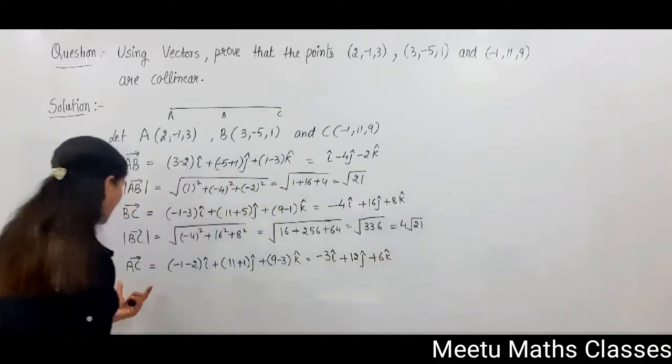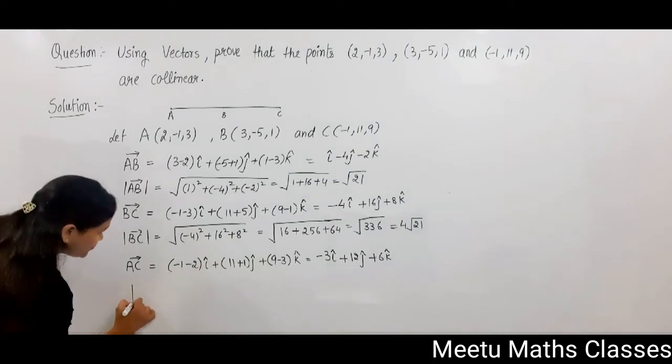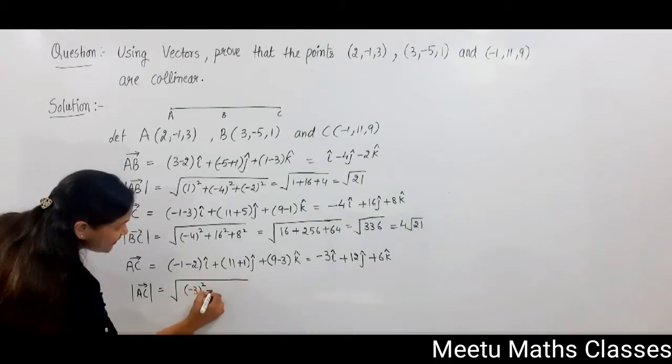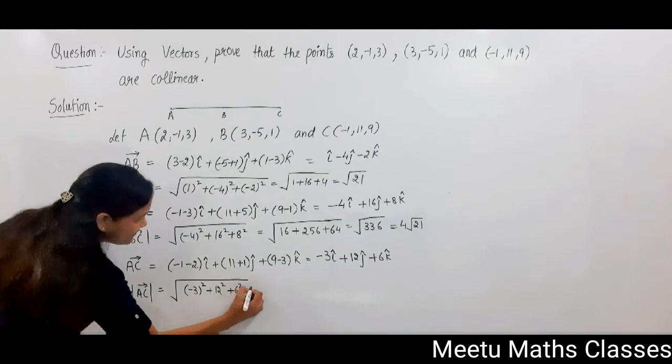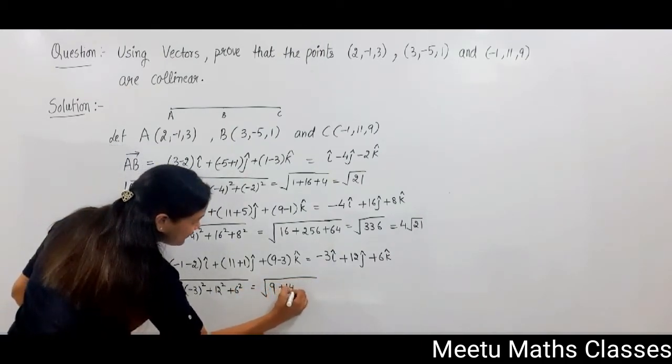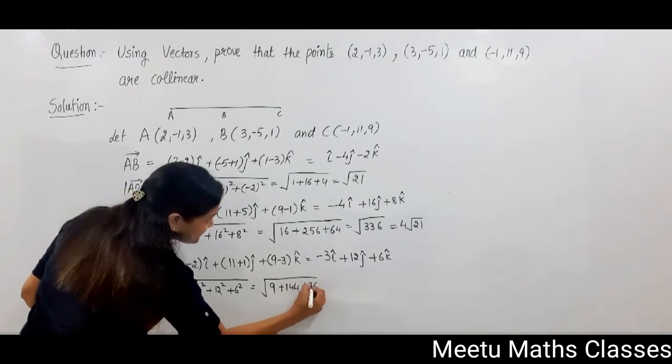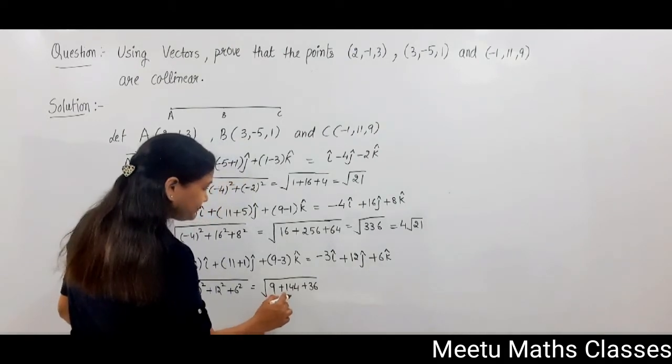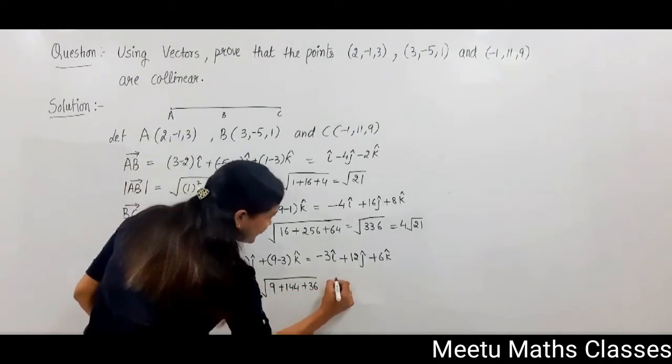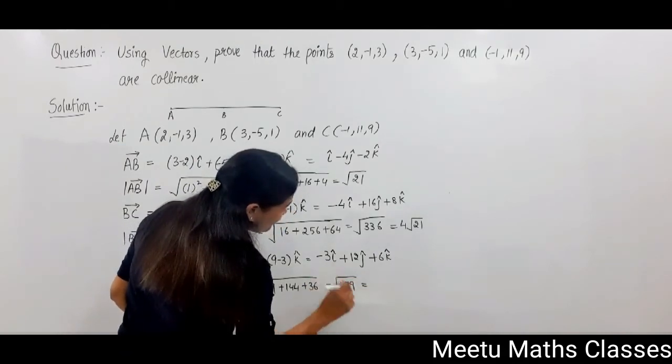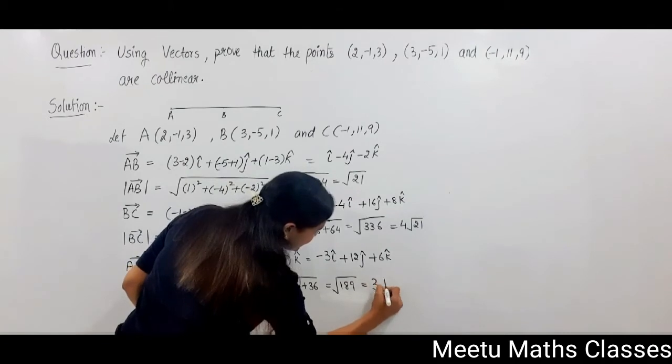Now from this vector AC we can find the magnitude of AC, and the magnitude of AC will become √((-3)² + 12² + 6²), and that equals √(9 + 144 + 36). Now this will become √189, and root of 189 is 3√21.